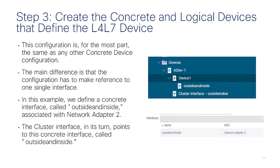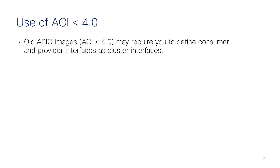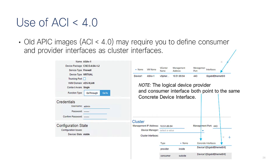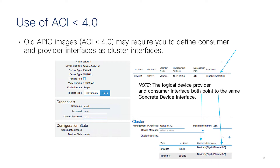In a redundant setup you have device 2, and in the cluster configuration you would also have device 2 outside and inside as the interface. On all APIC images prior to 4.0, you may have to provide the type of connector for the cluster interfaces, meaning you would still have to create two interfaces — one type provider and one type consumer — both pointing to the very same interface in the concrete device. This is not necessary with the latest releases, but if you happen to use an older one, be mindful of this.